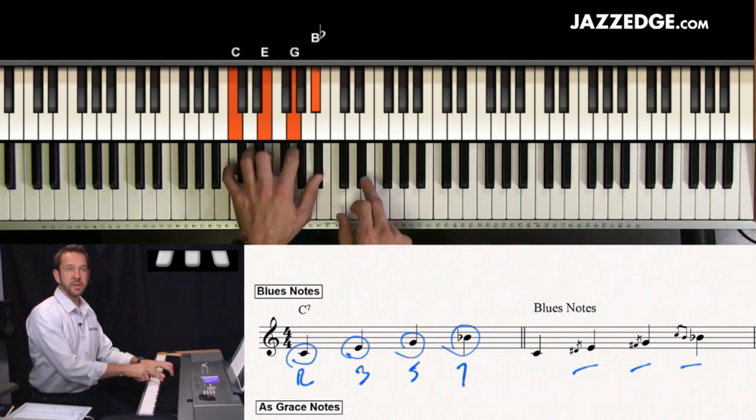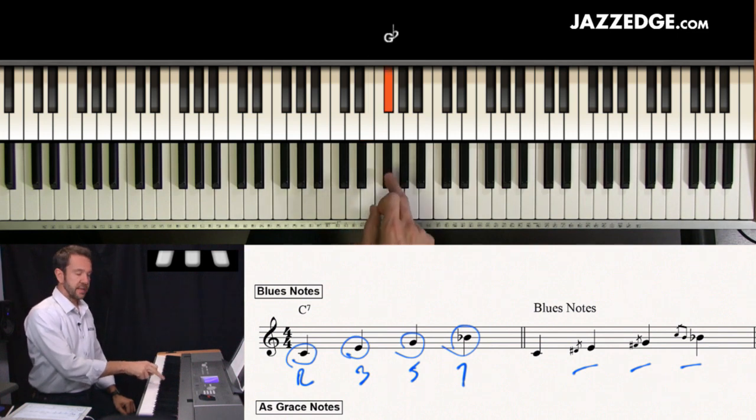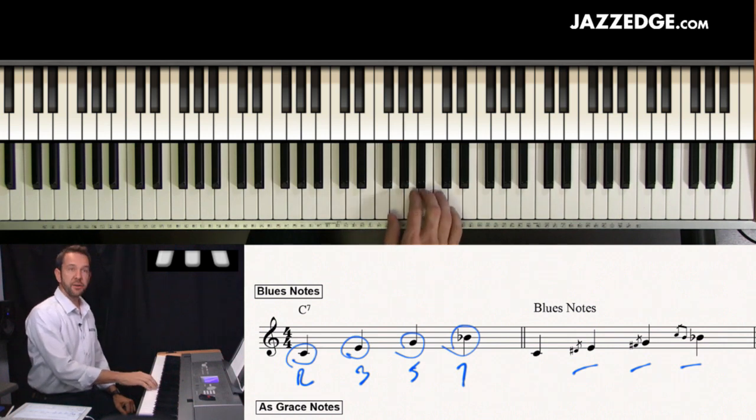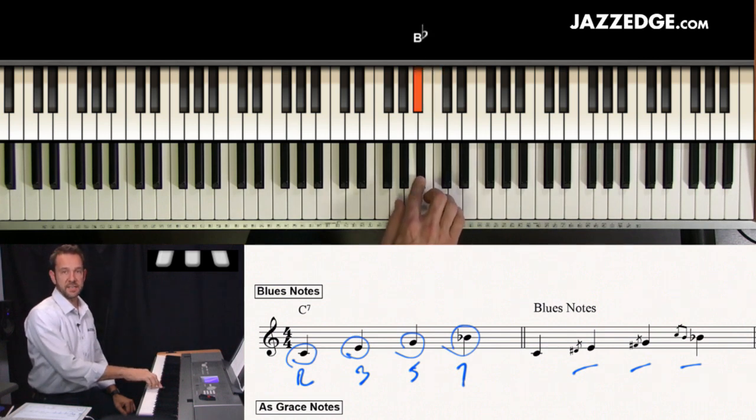The blues notes is the flatted third up to the natural third, the fifth or sharp four up to five, and you can also do this root down in the major seventh down to the flatted seven.